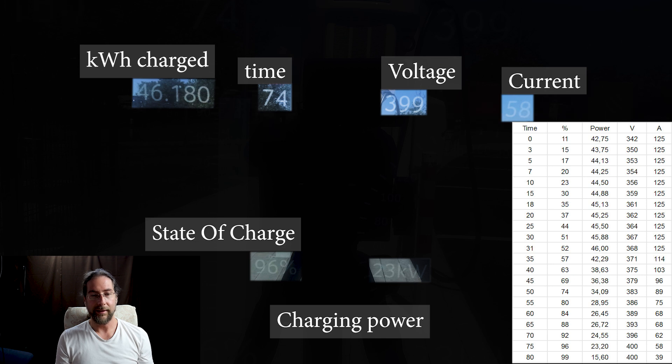94 percent, amps going down, voltage is almost at 400 volt, 23 kilowatt, still above if you charge AC. 96 percent, when does it go under the AC charging? At 97 percent you can either charge DC and now you have 21.